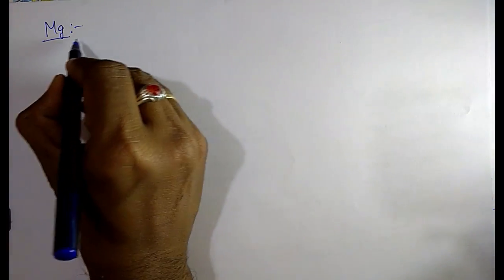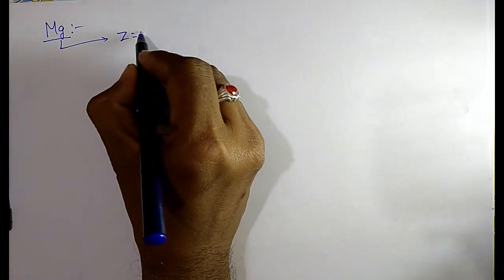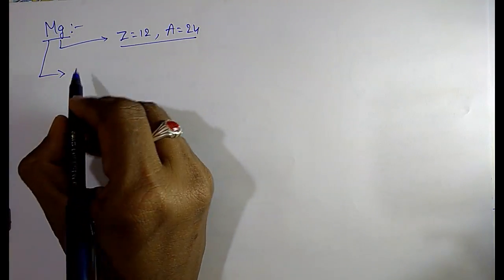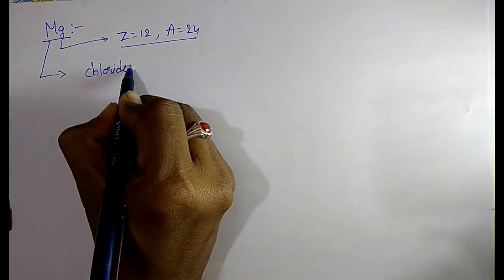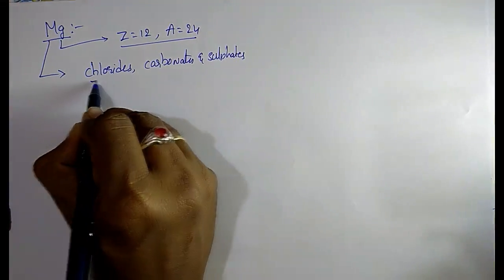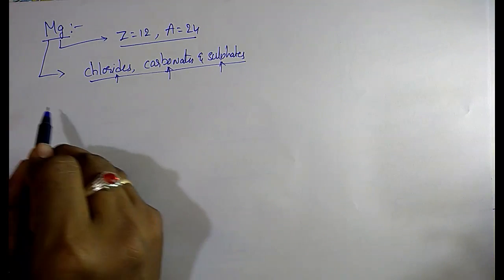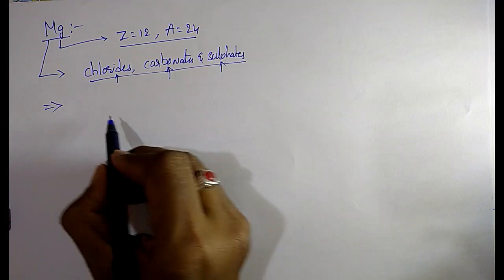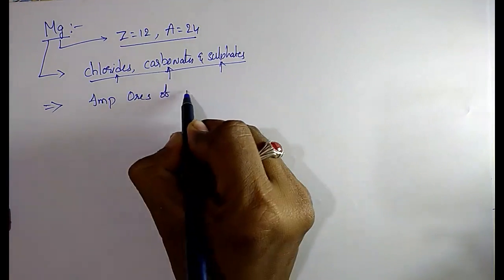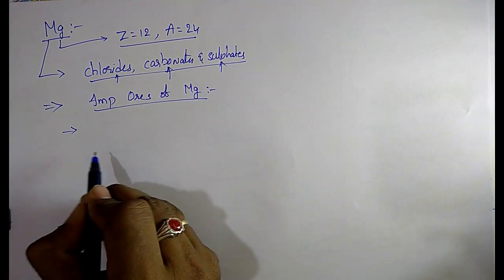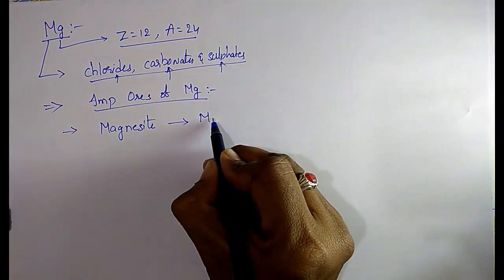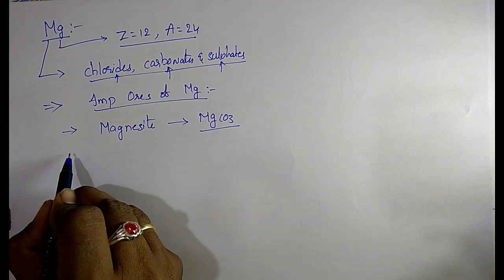Now I want to discuss magnesium and its compounds. Magnesium has atomic number 12 and mass number 24. It generally occurs in the form of its chlorides, carbonates, and sulfates. The very important ores of magnesium for exams: the first important one is magnesite, with chemical formula MgCO3 — magnesium carbonate.